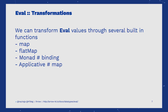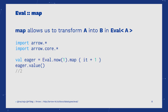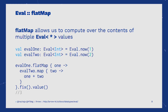We can transform the contents of Eval values by using `map` and `flatMap`, as we do in all other data types. `Map` allows us to transform the inner content of an Eval value without it being evaluated until we call the final method `value`. `flatMap` allows us to sequentially combine multiple Eval values without evaluating them until `value` is invoked.